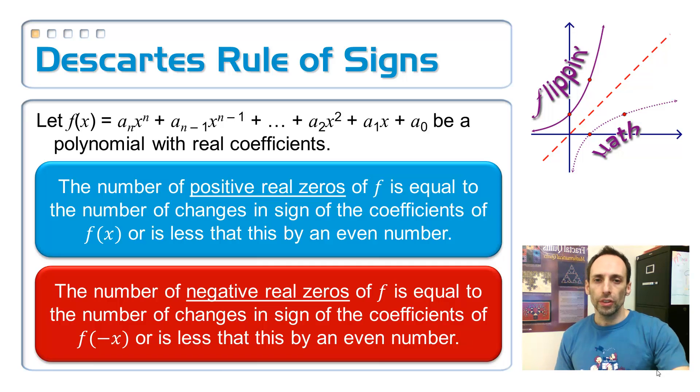So, here's his rules. Rules of signs. So, we have ourselves a polynomial function. And, again, don't let the math of it discourage you or frighten you away. The little a's with the subscripts, those are all just real numbers. And the x's, those are the exponents. And we're in standard form, going from highest power down to lowest power.